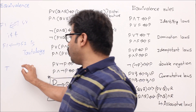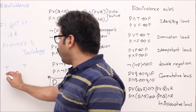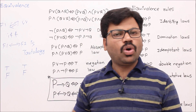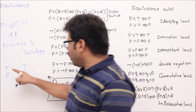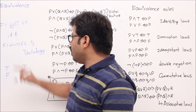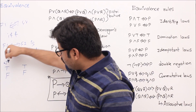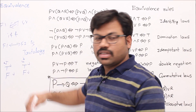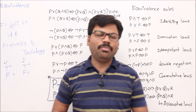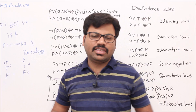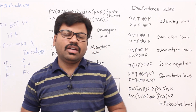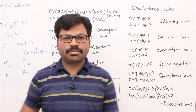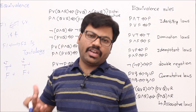Whenever f1 is true, f2 is supposed to be true, and when f1 is false, f2 is supposed to be false — there is no other way. By observing these two, you can realize that f1 and f2 have the same truth values. This is the core idea about equivalence: whenever f1 is true then f2 is true, and f1 is false then f2 is false.